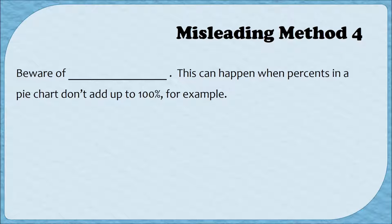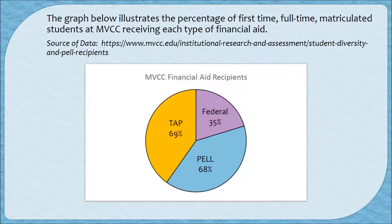The fourth misleading method is a caution to beware of misused percentages. The usual place you'll see this is when percents in a pie chart don't add up to 100%. The graph below illustrates the percentage of first-time, full-time, matriculated MVCC students who receive each type of financial aid: 35% receive federal aid, 68% receive Pell, and 69% receive TAP. Since 68% is more than half, that piece of the pie should be more than half. Same with 69%. You can't have two pieces each being more than half the pie, because then you'd have more than one pie.